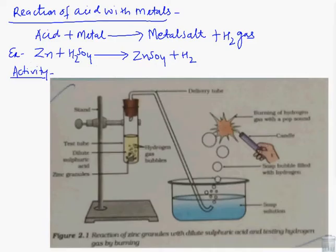Now chemical properties of acids. The first, reaction of acids with metal. When acid reacts with metal, it gives product metal salt and hydrogen gas. The example: Zinc plus H2SO4. This is metal, this is acid. That gives metal salt ZnSO4 zinc sulfate, and liberates hydrogen gas.